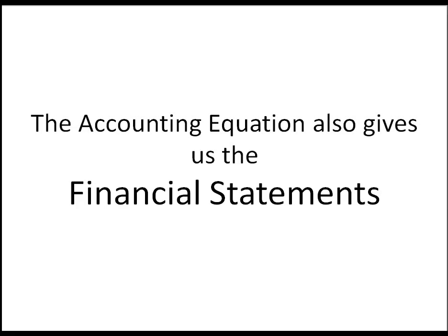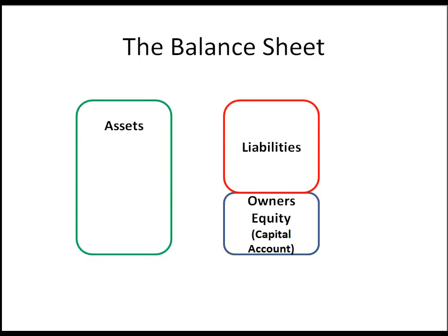Let's look at the accounting equation in terms of the financial statements, because the accounting equation also gives us the key financial statements. We have the balance sheet, which is assets equals liabilities plus owner's equity, and that's where we get the name 'balance' from. The total of our assets must balance with the total of liabilities and owner's equity. We can also reorganize this so that owner's equity equals assets minus liabilities.